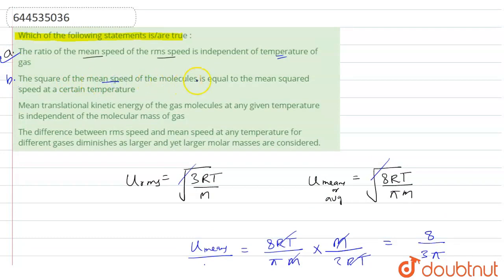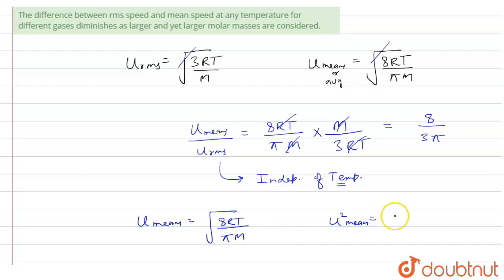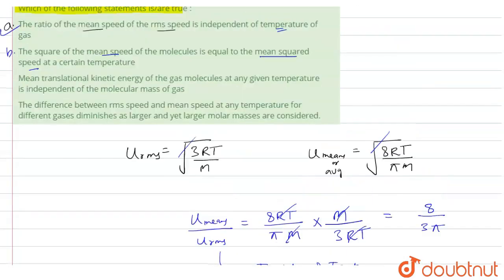Now let's talk about Statement B: the square of the mean speed of the molecule equals the mean square speed at a certain temperature. We know μ_mean = √(8RT/πM), so μ_mean² = 8RT/πM. This is not equal to μ²_mean (mean square speed) at any temperature. So Statement B is incorrect.